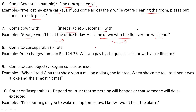Next is 'come to' in inseparable form, which means to total. Example: Your charges come to 124.38 rupees — will you pay by check, cash, or credit card? So it means the total has added up to 124.38 rupees, and he is asking how you will pay.